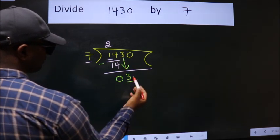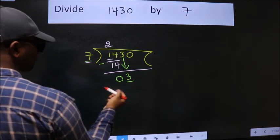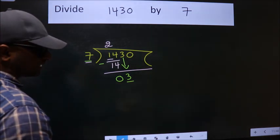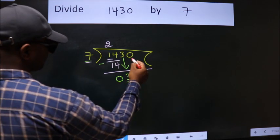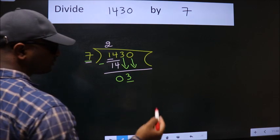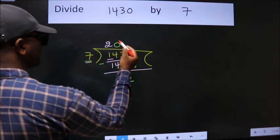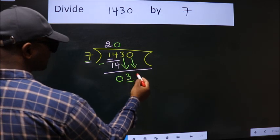Here we have 3, here 7. 3 is smaller than 7, so we should bring down the second number. And the rule to bring down the second number is put 0 here. Then only we can bring down this number.